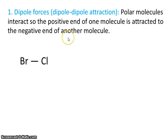You'll know from the electronegativity values on your periodic table that chlorine has a higher electronegativity and therefore will have a partially negative charge, leaving bromine with a partially positive charge.